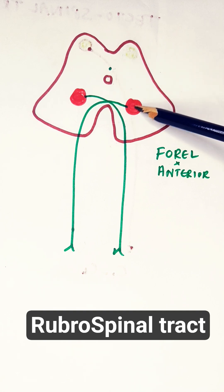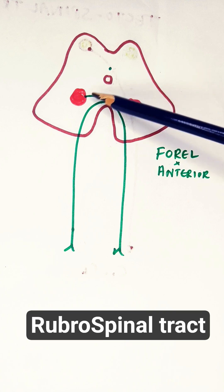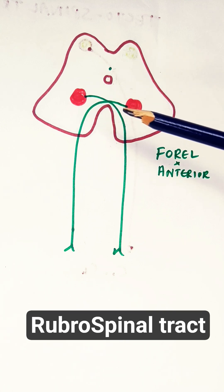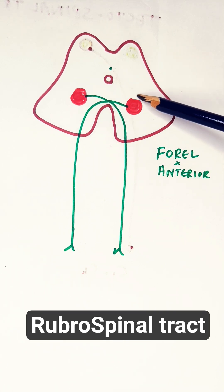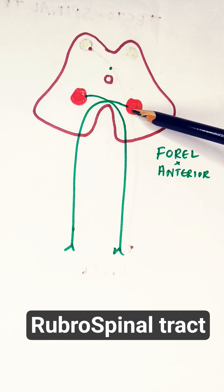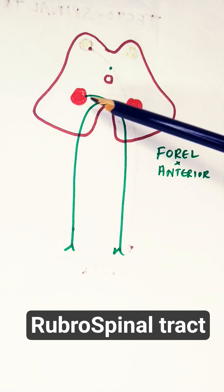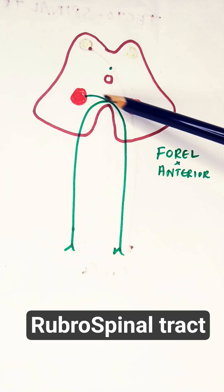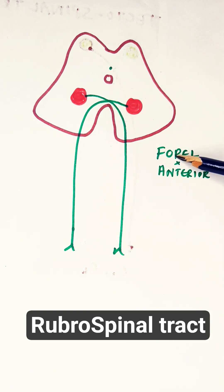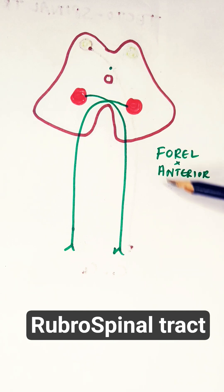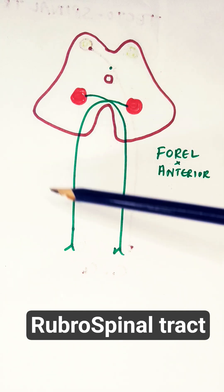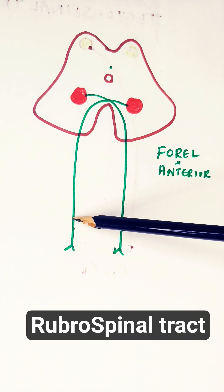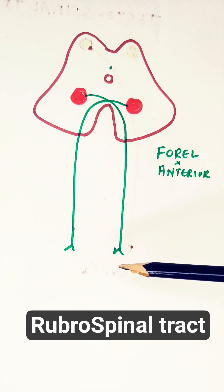From the magnocellular portion of the red nucleus, this pathway arises. Immediately after leaving the red nucleus, the fibres cross to the opposite side. That decussation, or crossover, is called the ventral tegmental decussation, otherwise known as the anterior tegmental decussation. The rubrospinal tract controls the contralateral side of the body because of this decussation.